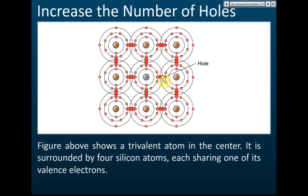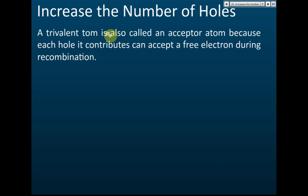A hole is a charge carrier, so it can increase the conductivity. Both electrons and holes are charge carriers and both can increase conductivity. Increasing electrons increases conductivity, and increasing holes also increases conductivity. That's how we increase the number of holes.